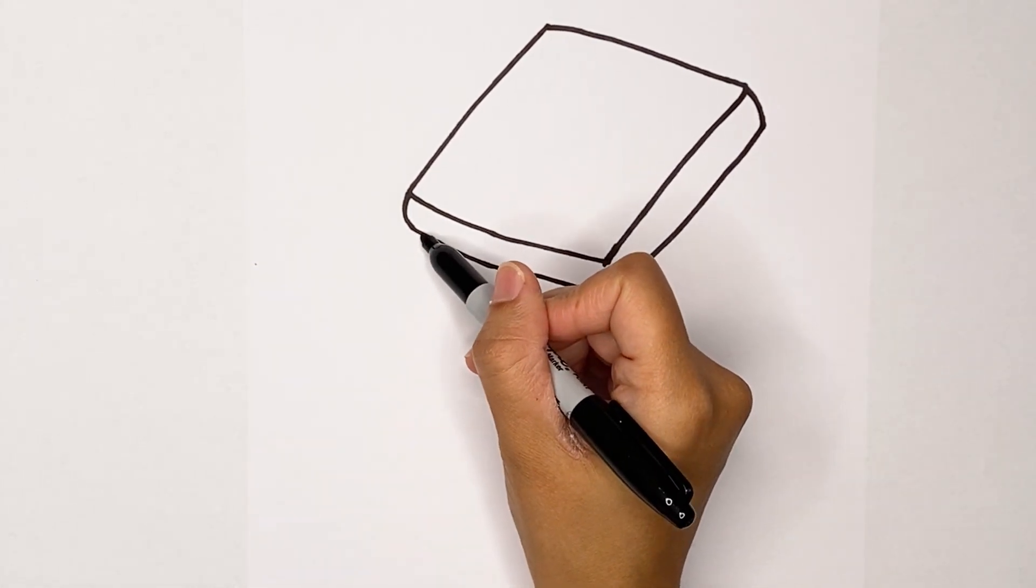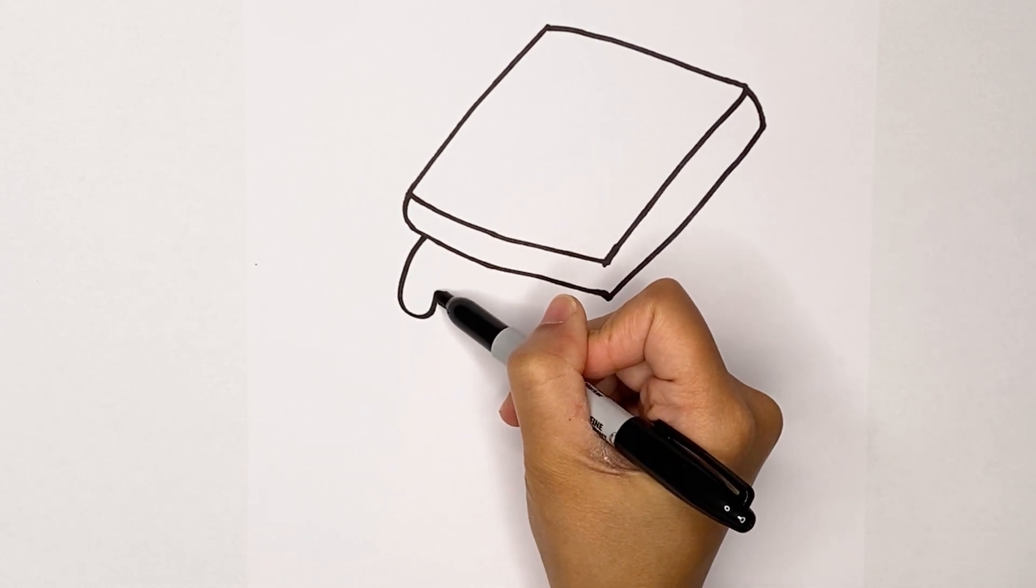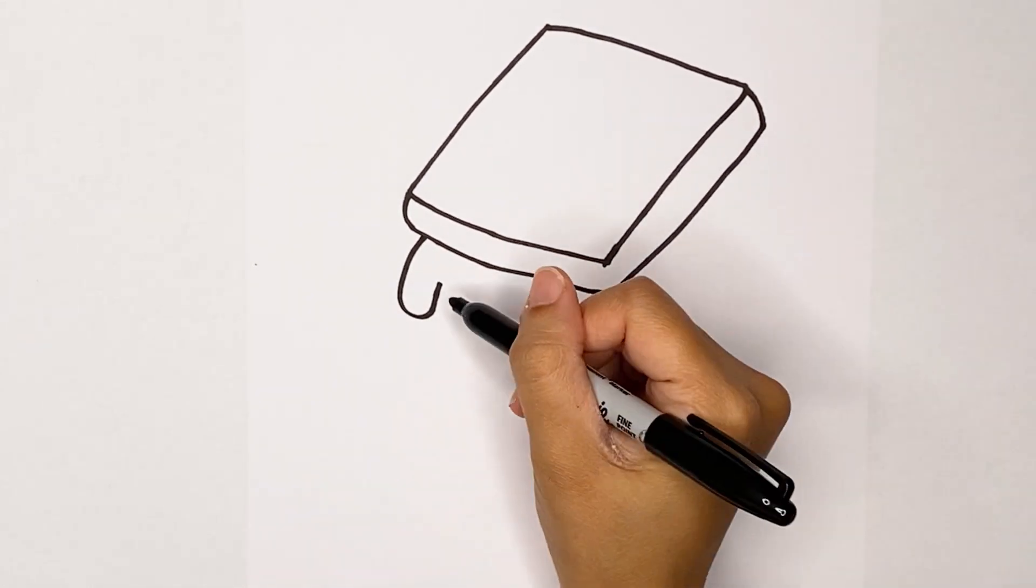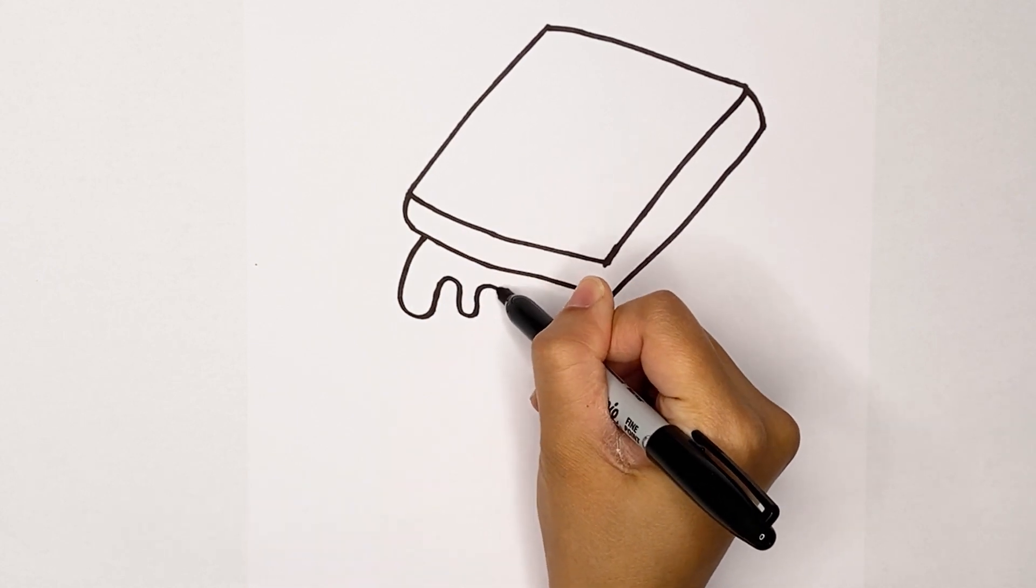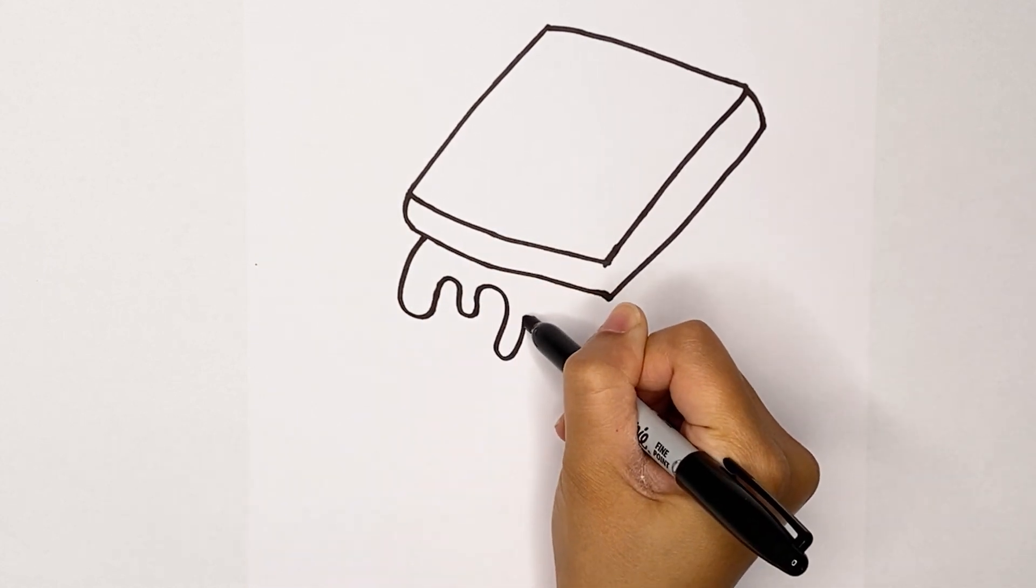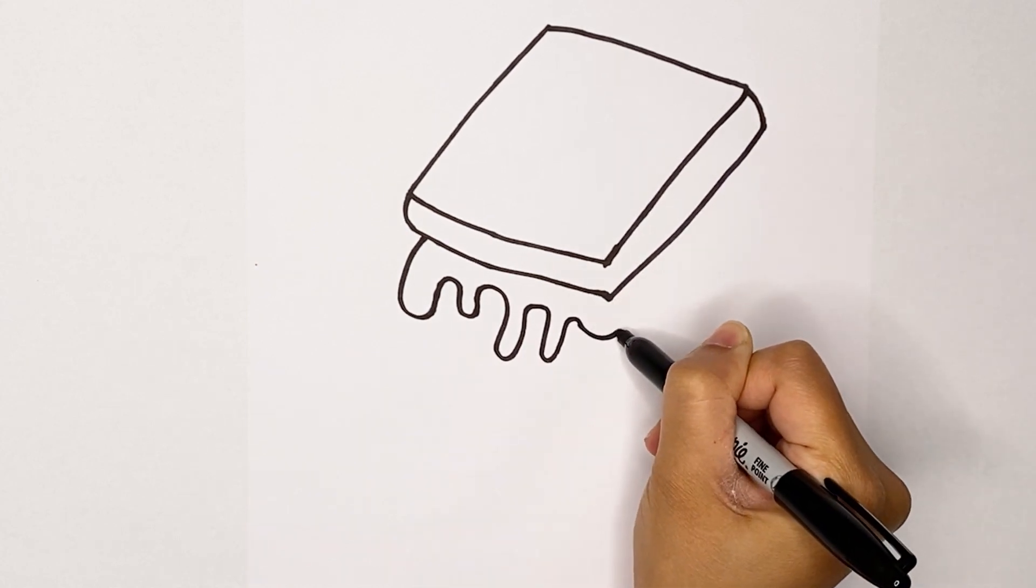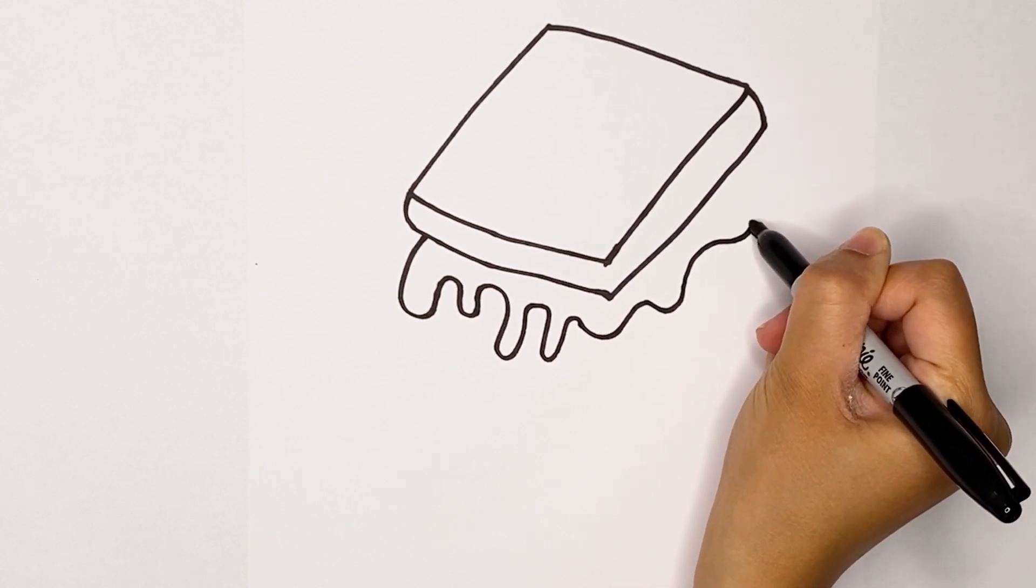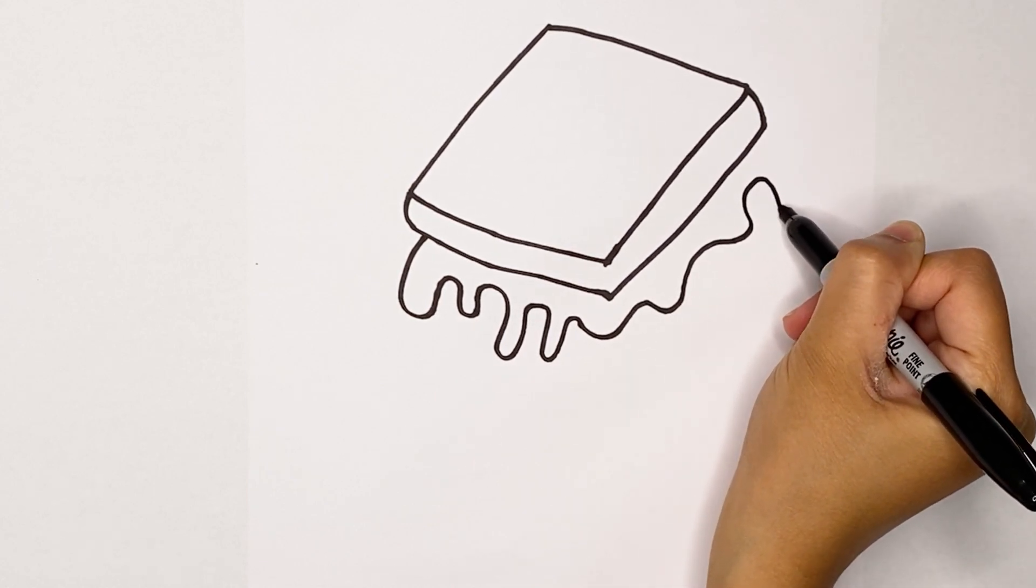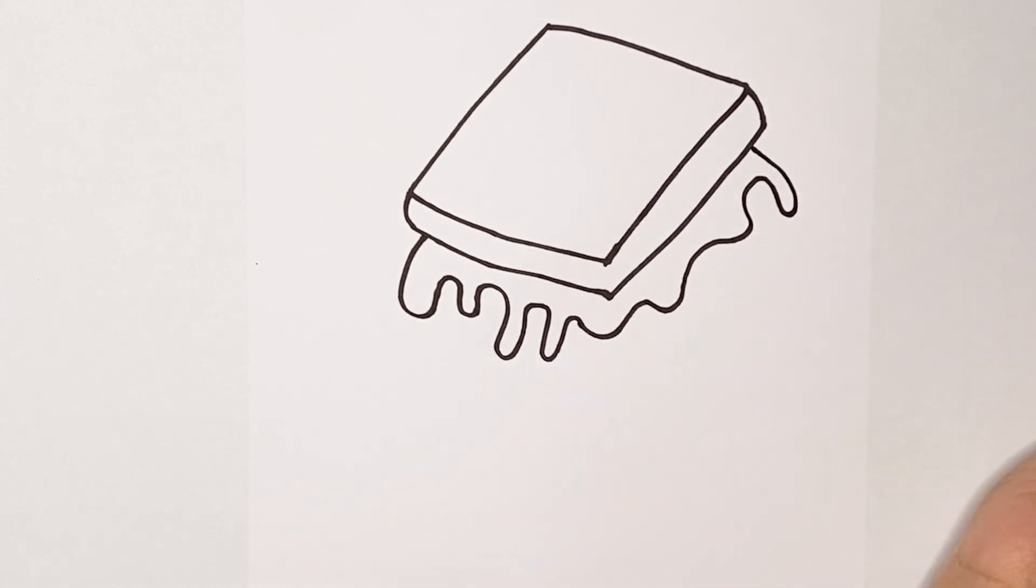Now we're going to make some chocolate by making drips, and they're just big curves. So make a big curve, and then a little one, maybe a bigger one here. It's up to you how you do these curves, but make it go all the way around. Continue, curve it up, and then one final drip and go back into the graham cracker.